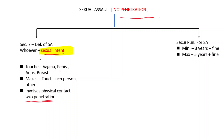So the offense involves touching vagina, anus, penis, or breast — or making the child do so to another person. It involves any physical contact without penetration. Section 7 states: whoever with sexual intent touches the vagina, penis, anus, or breast of the child, or makes the child touch the vagina, penis, anus, or breast of such person or any other person, with any physical contact but no penetration — that is sexual assault. In section 8, the minimum punishment is 3 years plus fine, and maximum is 5 years plus fine.